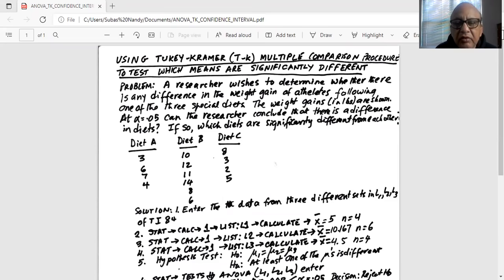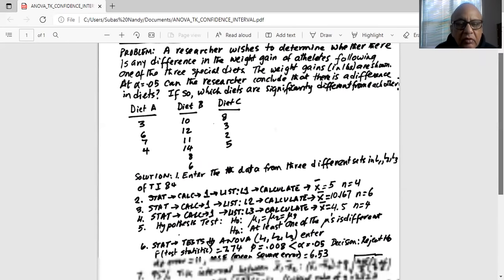If so, which diets are significantly different from each other? So there are three diets, three treatments: diet A, diet B, and diet C.